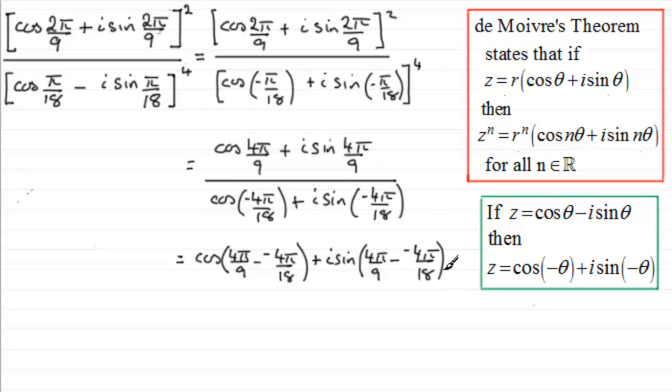Okay, so if we work out what that angle is, remember we're working in radians, so it turns out to be two-thirds π. So we've got the cos of two-thirds π plus i sine of two-thirds π.